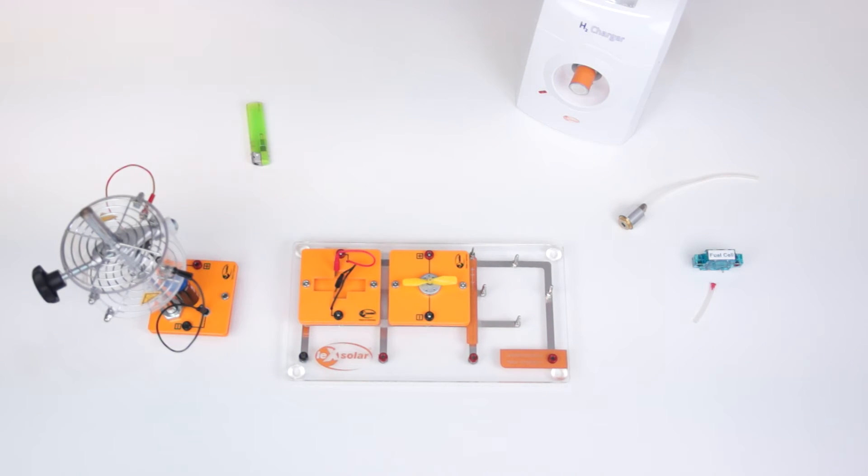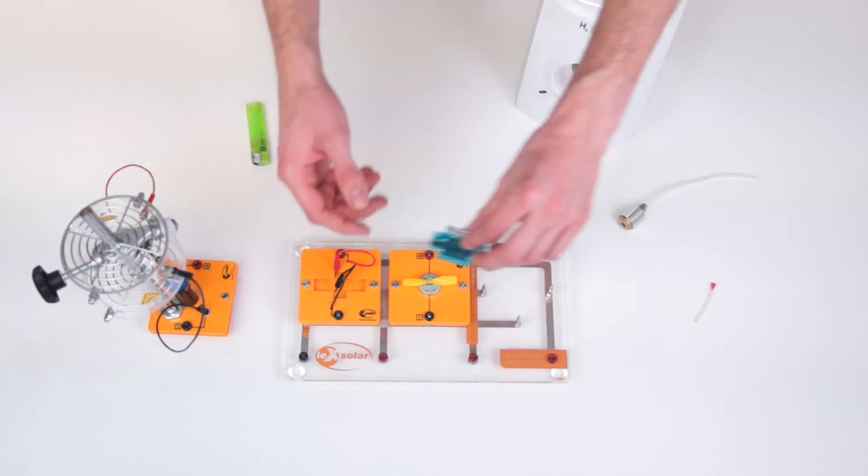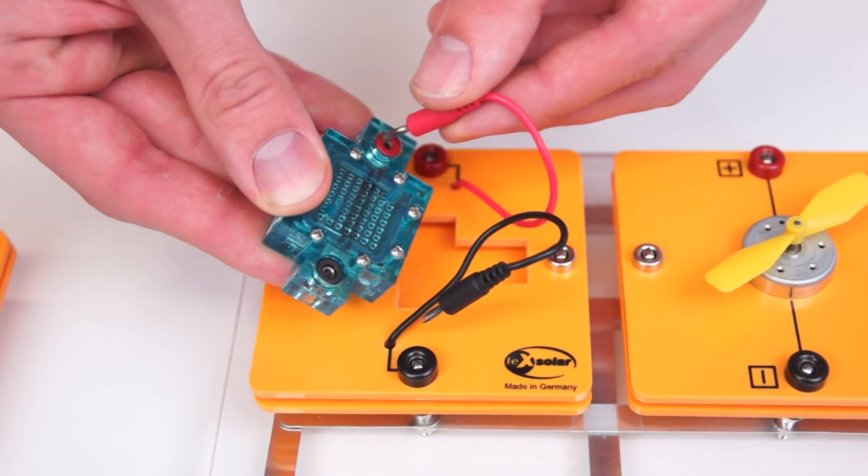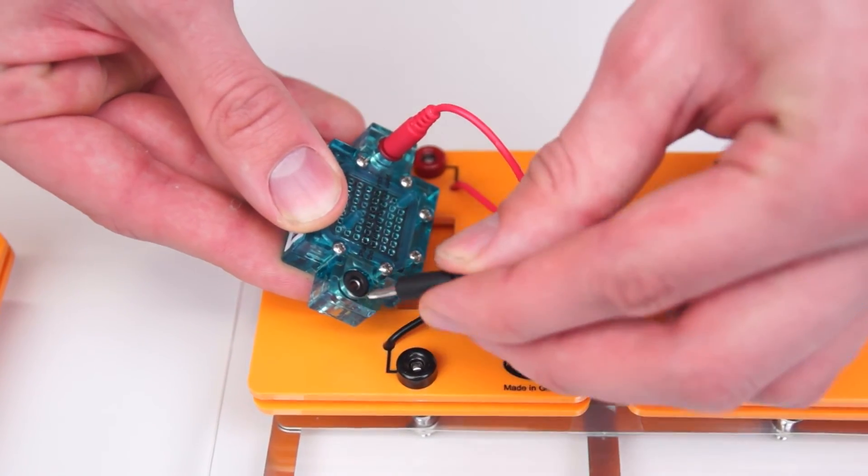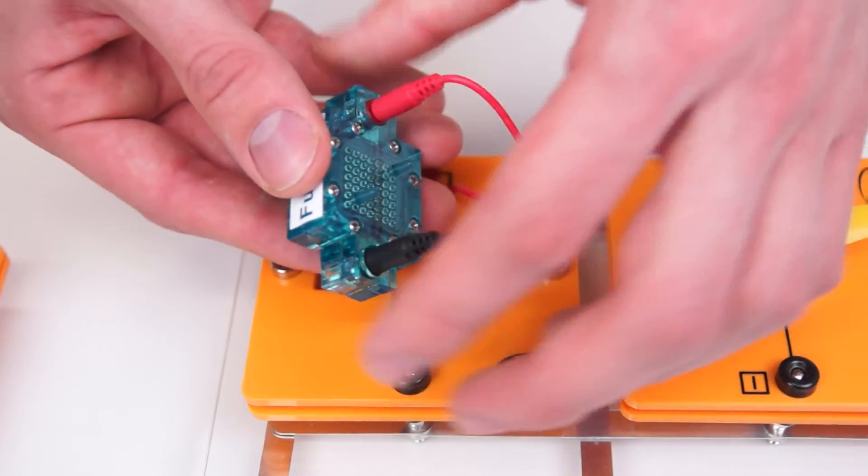We then take the PEM fuel cell and plug in the connections of the module plate. It is important to ensure that the polarity is correct. That is red to red and black to black.